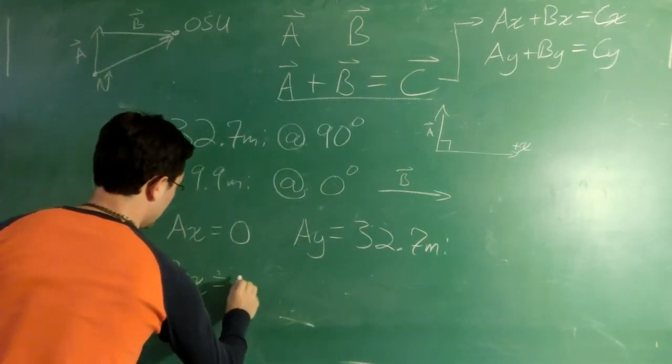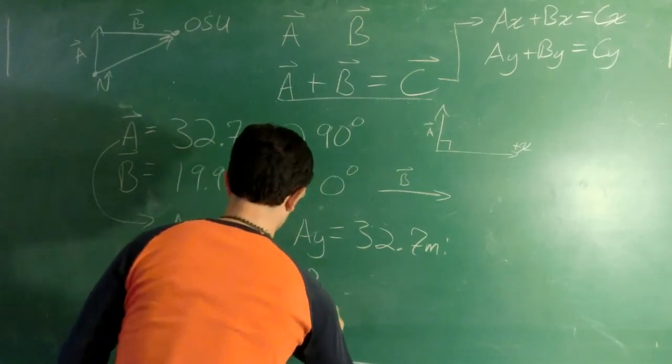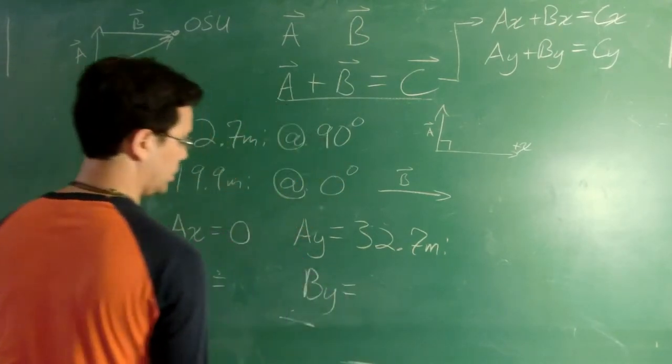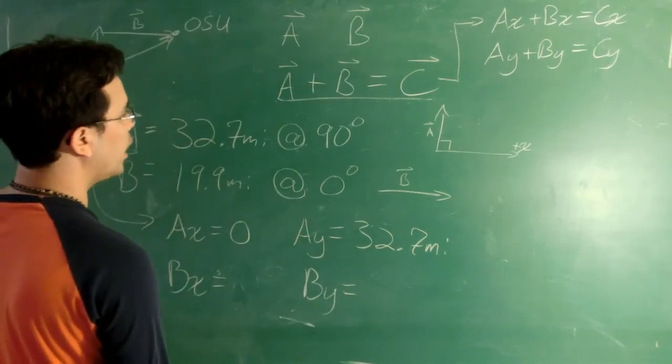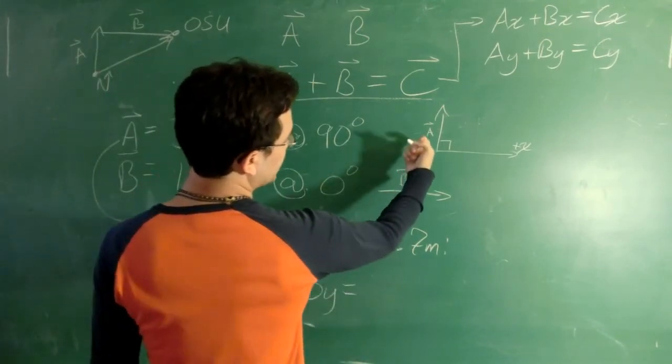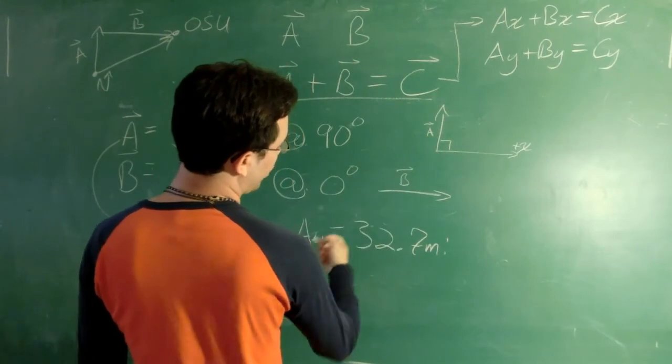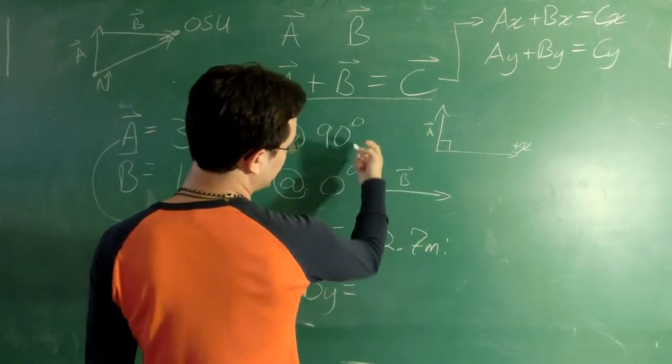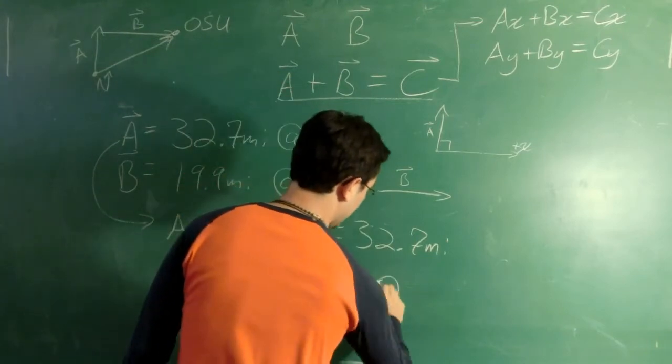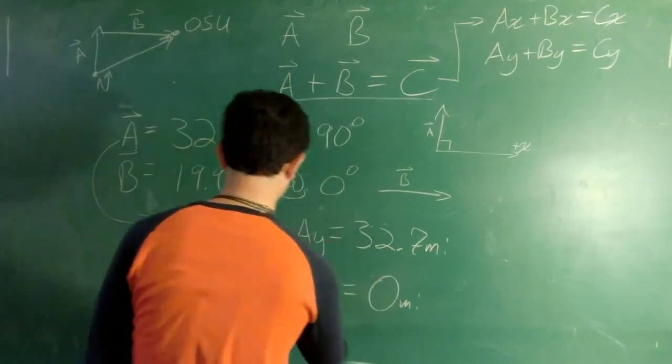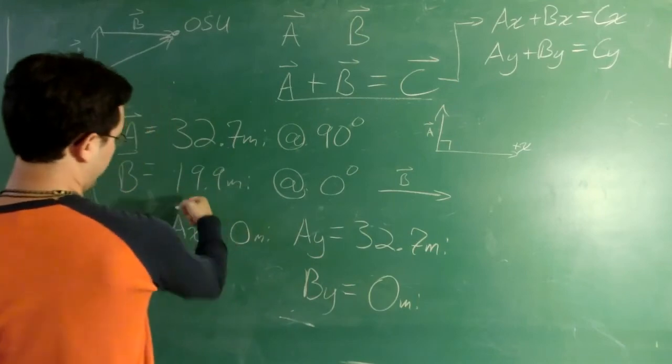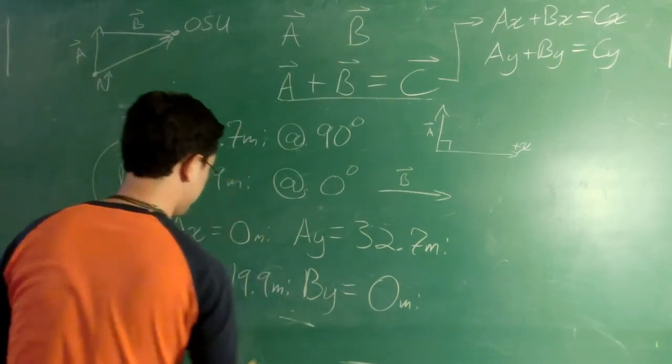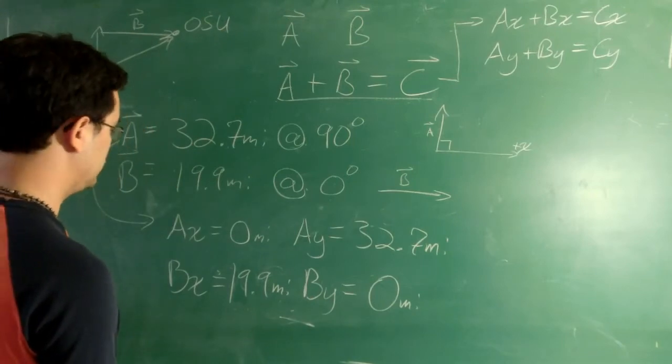So let's look at B of x. And B of y. Well, our B of y, for the same reason that A sub x was 0, our B sub y is going to be 0, because all of it is in the x direction. None of it is up and down. So in this case, that one's 0. And the whole thing, 19.9, is in the x direction.